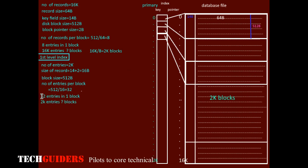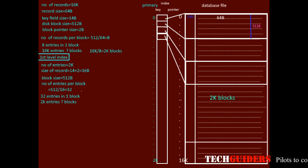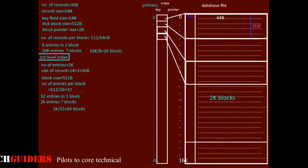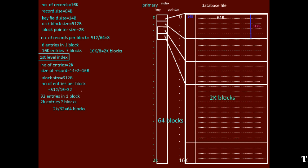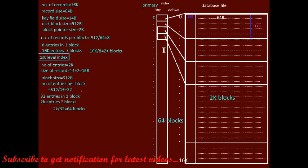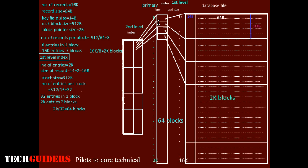Since the block size is 512 bytes and each index entry is 16 bytes, we can keep 512 divided by 16, which is 32 entries per block. For 2k entries, we need 2k divided by 32, which is 64 blocks to keep the first level index. Since the index file itself is large and requires 64 blocks, we can create one more index for this index.